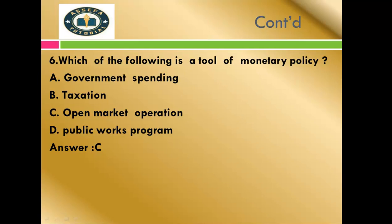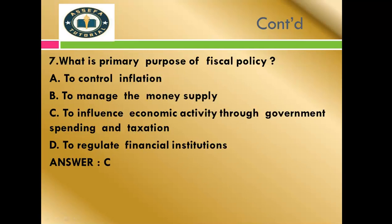Question number six: Which of the following is a tool of monetary policy? To implement monetary policy there are three tools: open market operation, discount rate, and reserve requirement ratio. The main tool to implement monetary policy is open market operation. Therefore the correct answer for question number six is C, because open market operation is a tool to implement monetary policy.